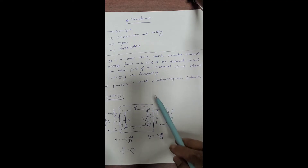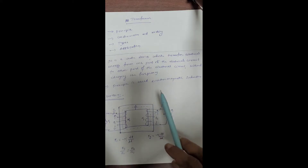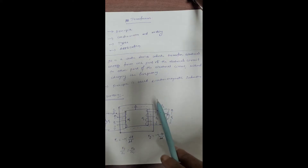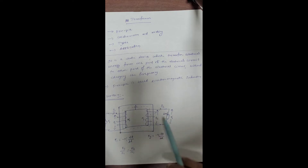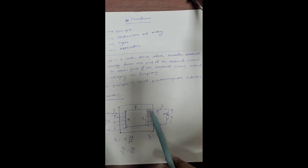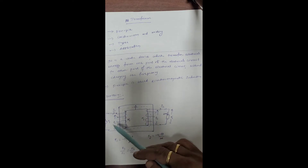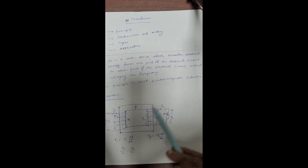There are some important points to remember. First, transformer action is based on the law of electromagnetic induction. Second, there is no electrical connection between primary and secondary — that is the beauty of the transformer. AC power is transported from primary side to secondary side through a common magnetic flux. Third, the input frequency will be the same as output frequency — there is no change in frequency.